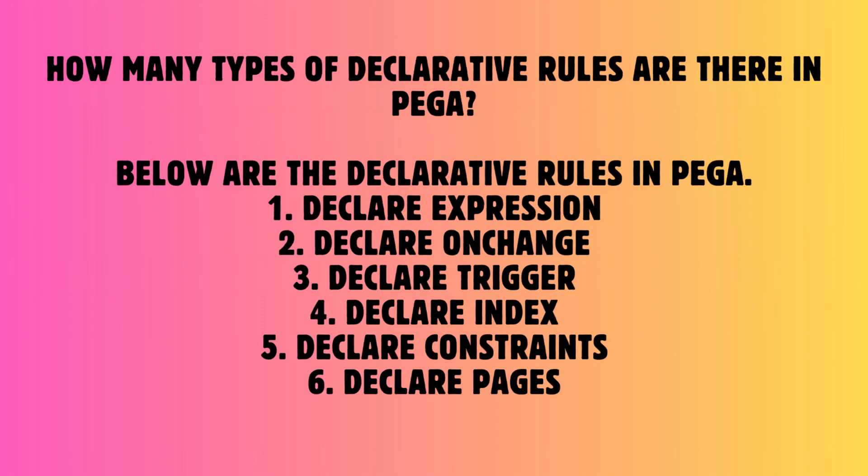Question: How many types of declarative rules are there in PEGA? Answer: Below are the declarative rules in PEGA: 1. Declare Expression, 2. Declare On Change, 3. Declare Trigger, 4. Declare Index, 5. Declare Constraints, 6. Declare Pages.